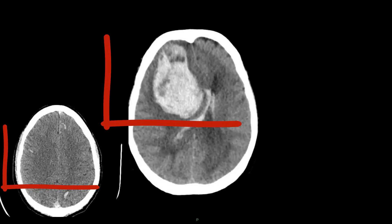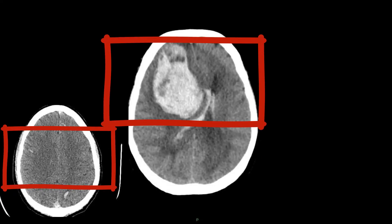Intracerebral hematoma has the worst prognosis and occurs within the brain parenchyma, especially due to the leaking of an artery. It can be caused by high blood pressure, trauma, or blood-thinning medications. It can also be called a hemorrhagic stroke.